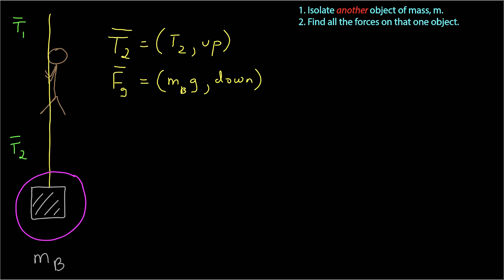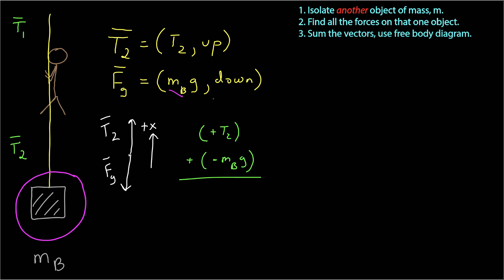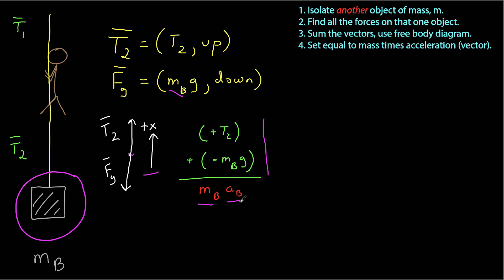There's also the force due to gravity on the box, with a magnitude of m sub b times the acceleration due to gravity, directed down. Now I need to sum the vectors using a free body diagram with vectors in appropriate directions. With the positive direction up, in one dimension I have positive T2 added to negative m sub b times g. This equals m sub b times the acceleration of the box, labeled with subscript b.